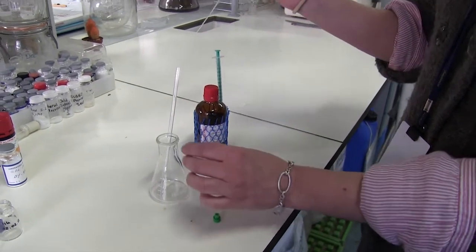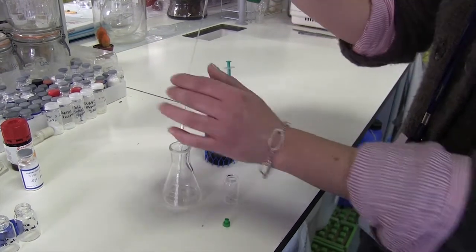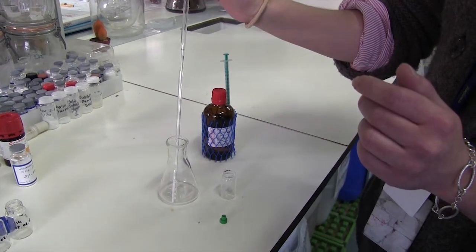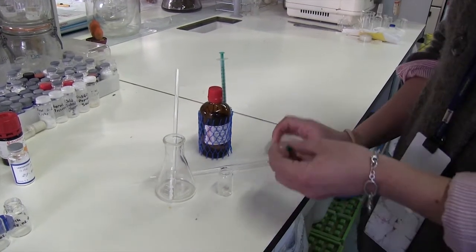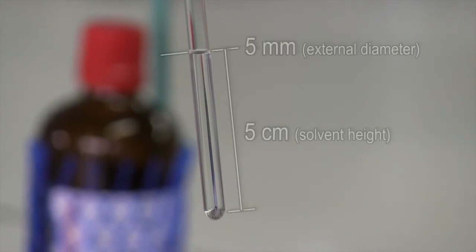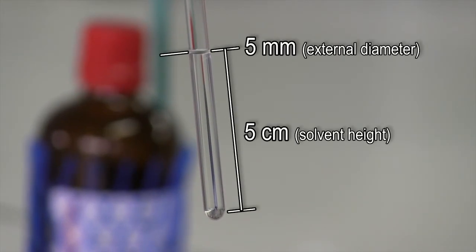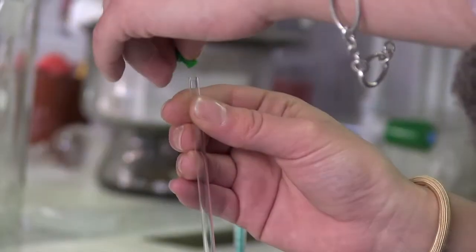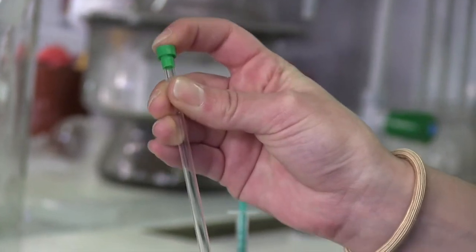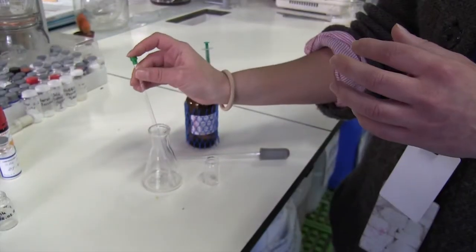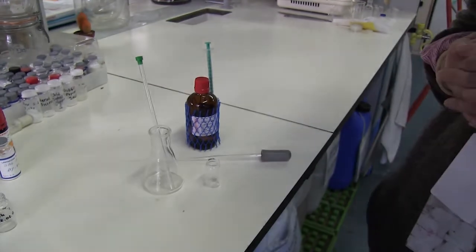The solution is then transferred to the NMR tube without spilling it. The NMR tube is a kind of precision test tube. It exactly has 5 mm of diameter, and the solution must reach at least 5 cm in height. The tube is conveniently stopped. Now we are all set to go to the spectrometer and perform the recording of the spectrum.